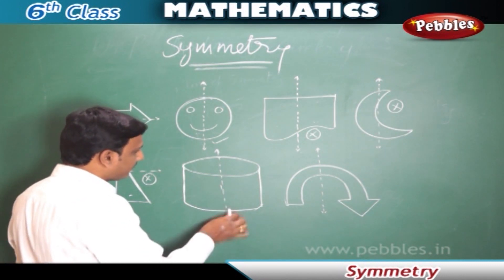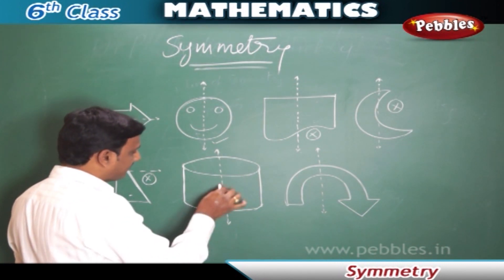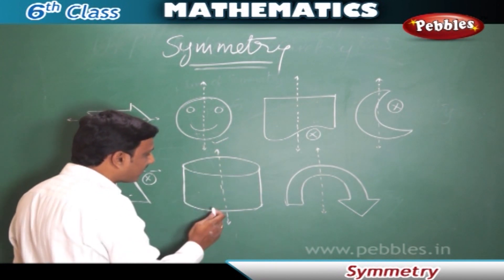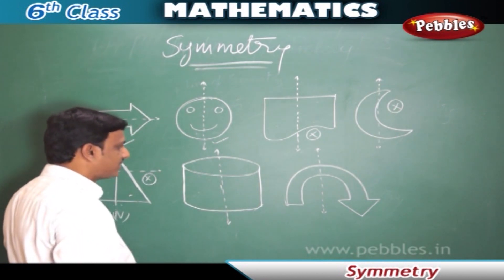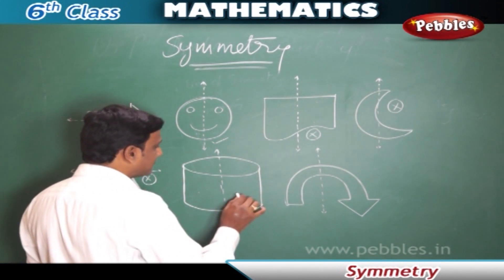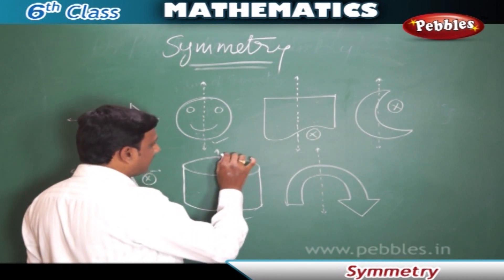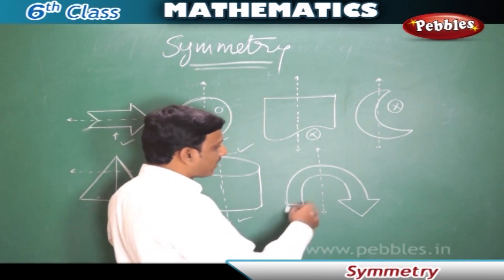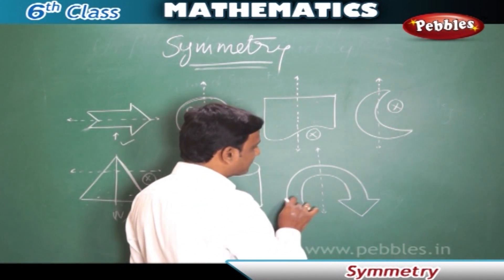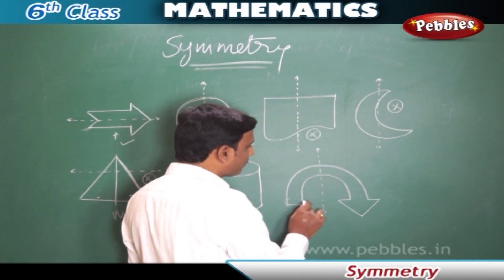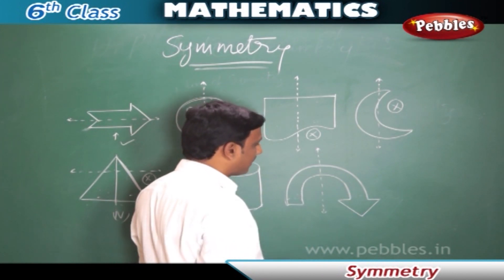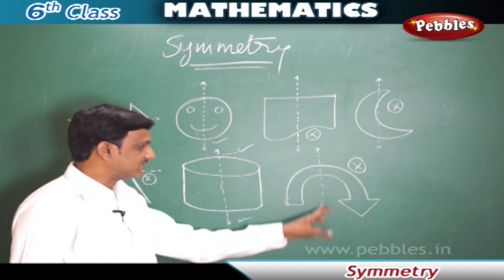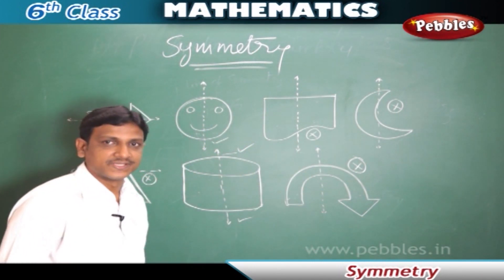Coming to this cylindrical shape — the dotted line is making the figure into two identical parts. If the figure is folded at this axis, both parts match each other, so this is a symmetric figure and this dotted line is the line of symmetry. Now the last figure — both halves are not identical, this line is not making the figure into two identical parts, so this is not a symmetric figure and this is not a line of symmetry.